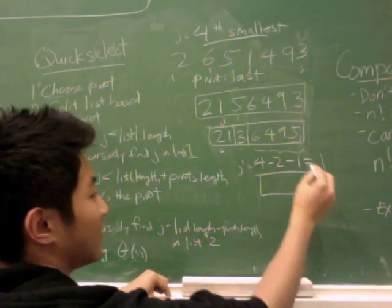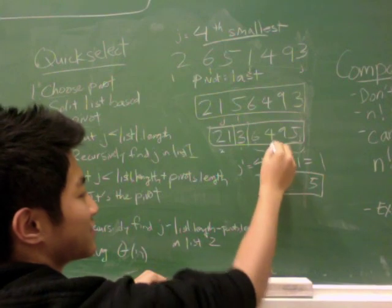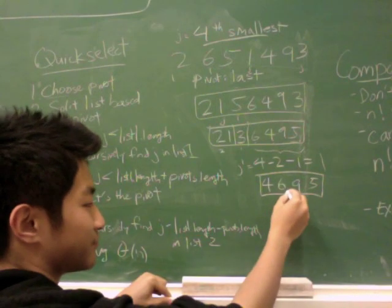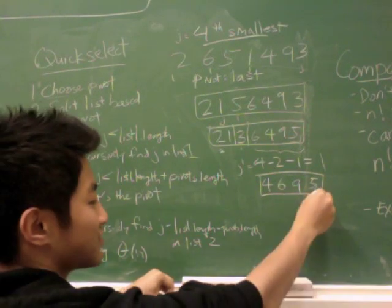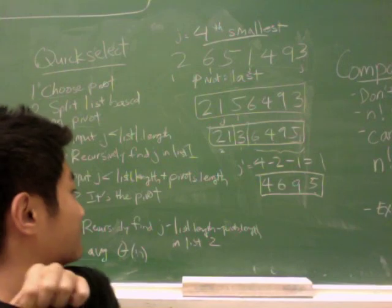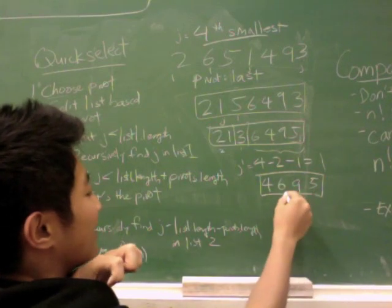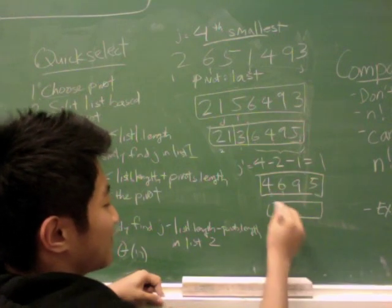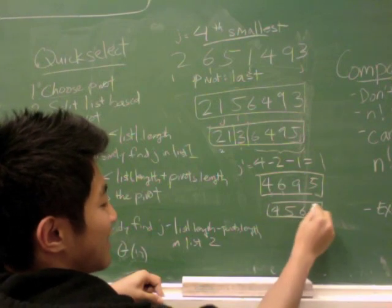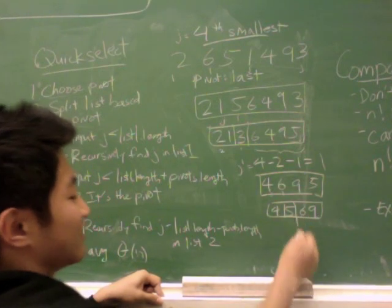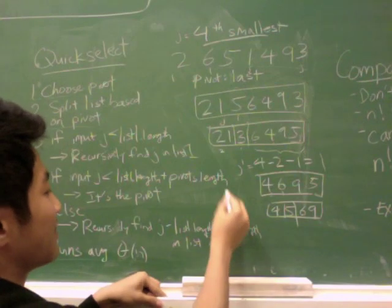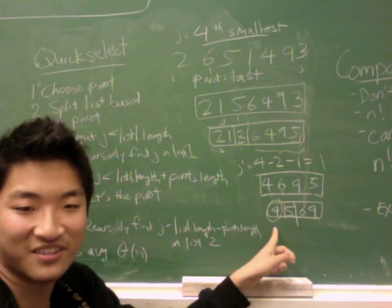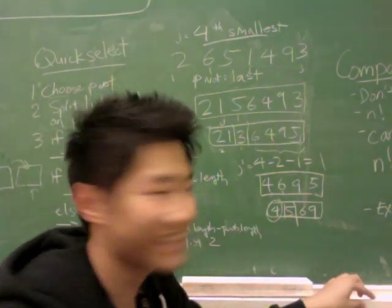Our pivot's five. So i stops at six. j stops at four. We have four, six, nine. And then i stops at six and j stops at four. So we know to swap the five and the six here, four, five, six, nine. And then we've reached our base case because our j is here and this is of length one. And so QuickSelect gives us four. Awesome. So that's how QuickSelect works.